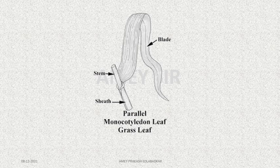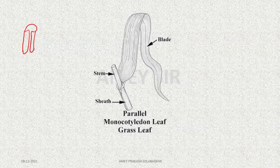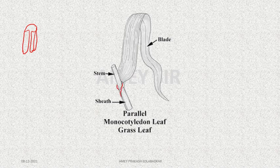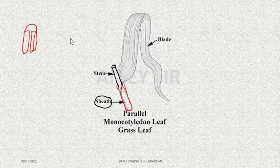Sometimes the leaf base is a sheathing leaf base. In this case, the leaf base wraps around the stem and completely covers it, as you can see in the diagram. This sheathing leaf base we will describe further. A classic example of the sheathing leaf base is found in grasses.